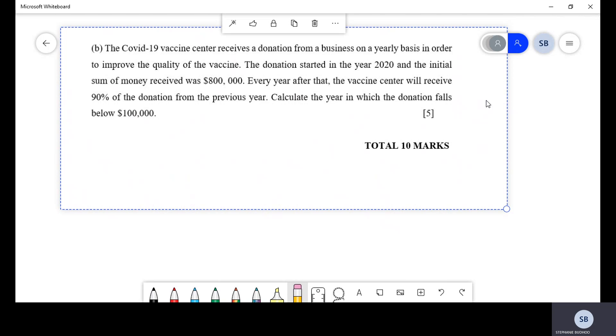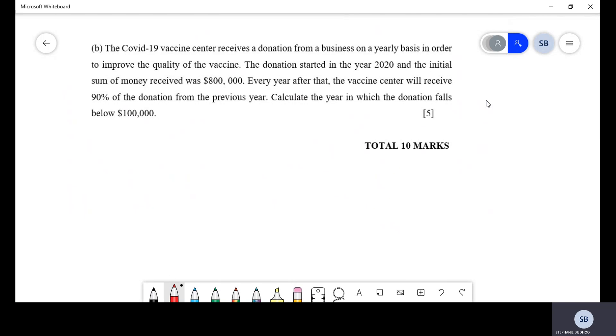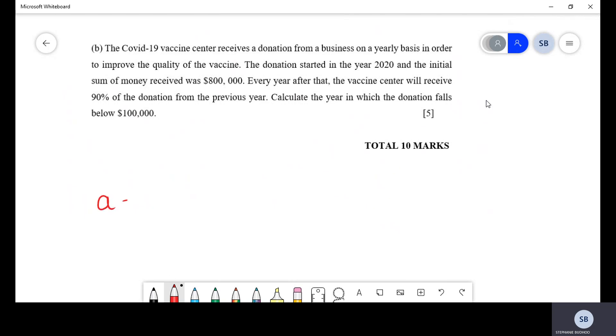Now, on reading a question like this, if you're thinking along the lines of GPs or APs, the first thing you do know is that the first value A must be equal to $800,000 because that's like A equals 2. Now, you don't know if it's going to be an AP or GP just yet. You have to continue reading the question to figure it out. So, then they say every year after that. So, the first year they get like a hundred percent. Then, every year after that, the vaccine center will receive 90% of the donation.